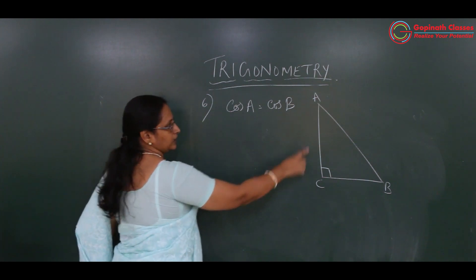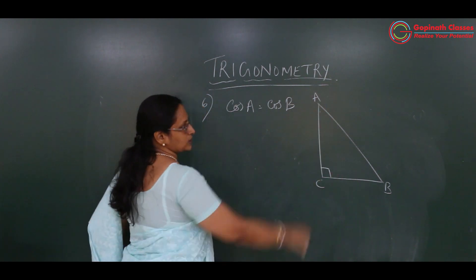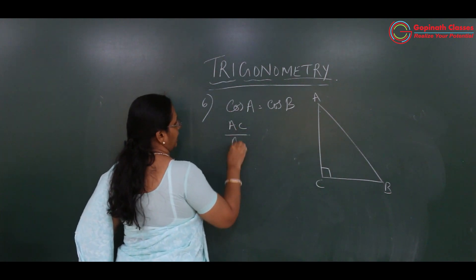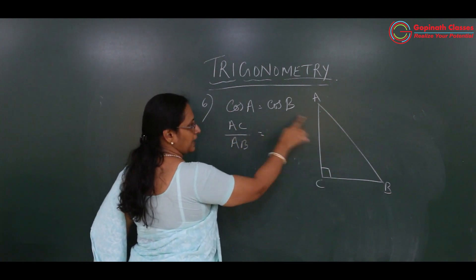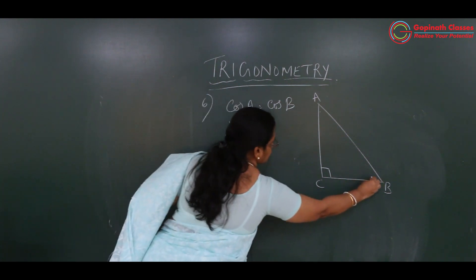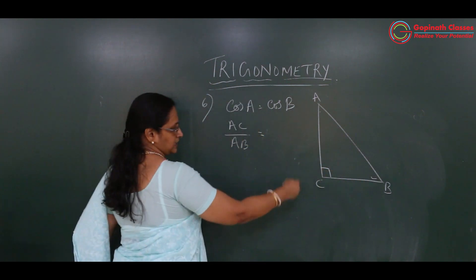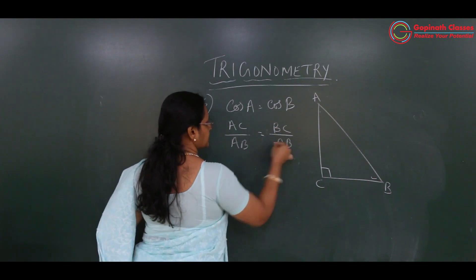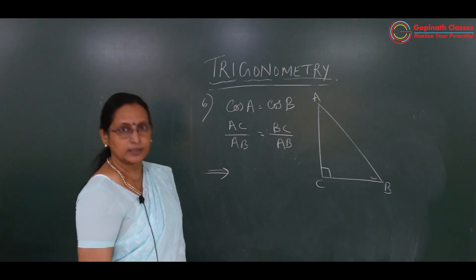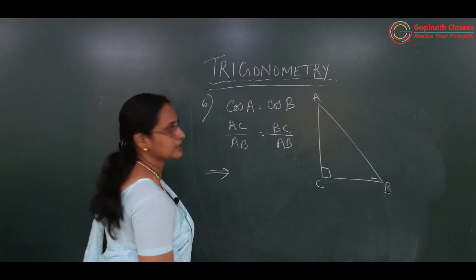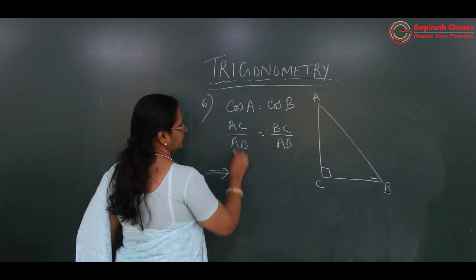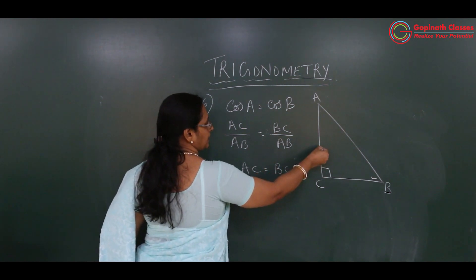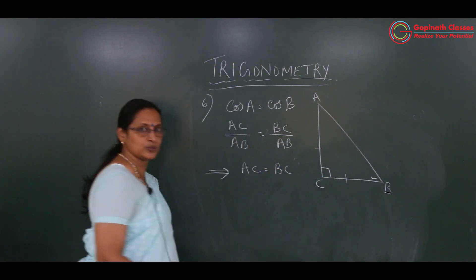So let's draw the figure. A and B are acute angles, and let C be the right angle. Given cos A is equal to cos B. What is cos A? Looking at the figure, it is adjacent side upon hypotenuse, which is AC upon AB. And cos B is BC upon AB.